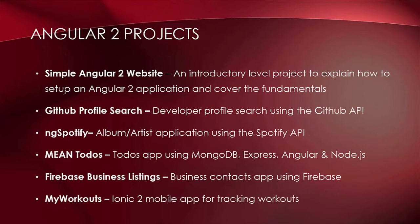Now let's take a quick look at what kind of projects we'll be building. The first project is an introductory level project to explain how to set up Angular 2 applications and cover the fundamentals. Then we'll build a GitHub Profile Search using the public API, NG Spotify for artist and musician lookup using the Spotify API, Mean Todos using MongoDB, Express, Angular, and Node.js, and Firebase Business Listings where we can add and manage businesses with data stored in Firebase. My Workouts will be an Ionic 2 mobile app for tracking workouts.